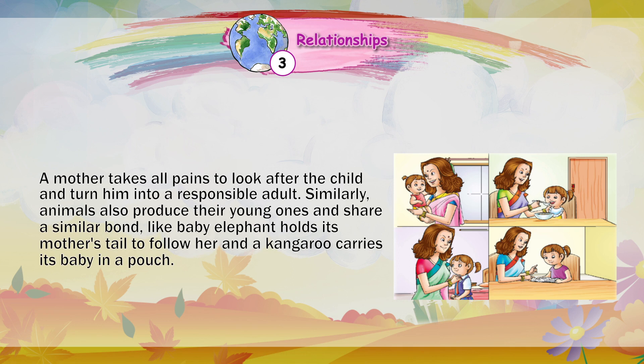Similarly, animals also produce their young ones and share a similar bond — like a baby elephant holds its mother's tail to follow her, and a kangaroo carries its baby in a pouch.